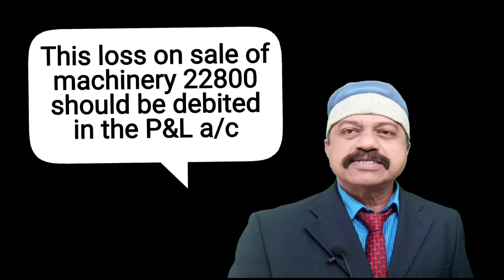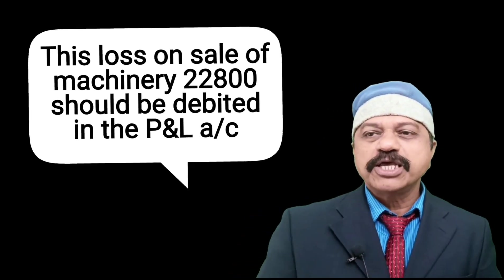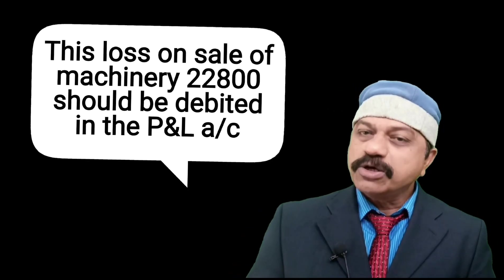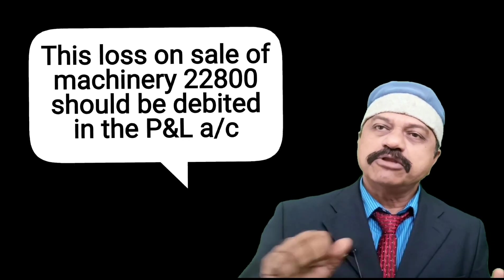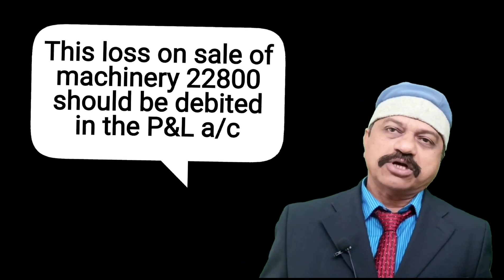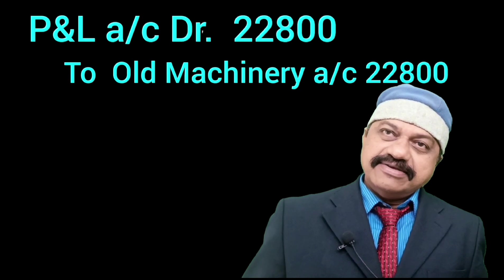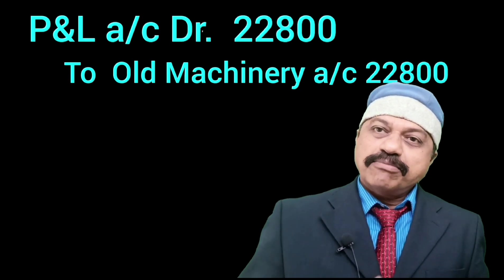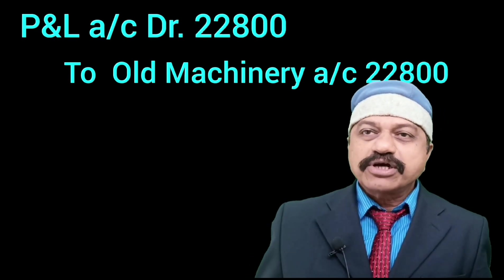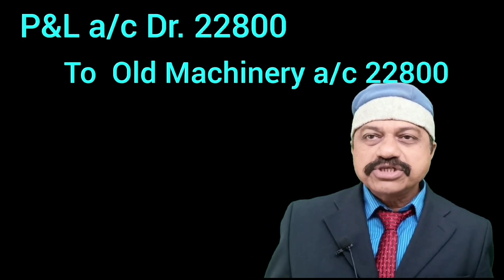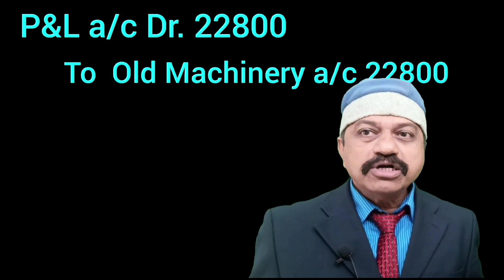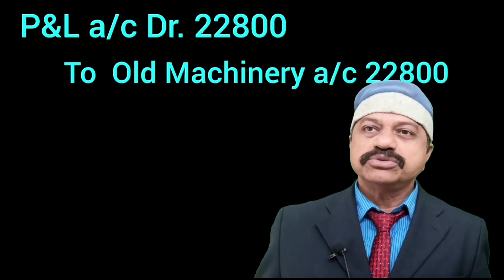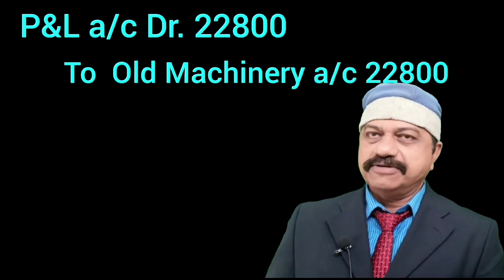This loss on sale of machinery of 22,800 should be debited in the profit and loss account. The journal entry is: Profit and Loss Account Dr 22,800 to Old Machinery Account 22,800.